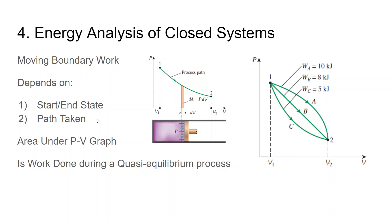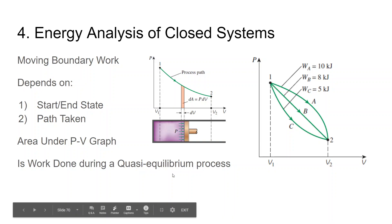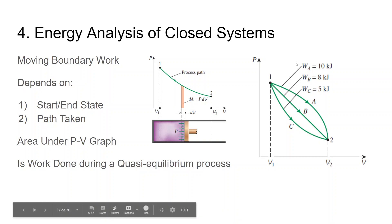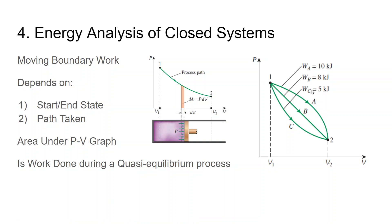Remember, work done is just force times distance. If you want to move from point A to point B along a linear path, you use a certain amount of energy. But if you walk ten times the distance compared to walking once, there's an energy difference — you put in more work. So moving boundary work is dependent on the path taken; even going from point A to point B, you can have different amounts of work depending on the path.